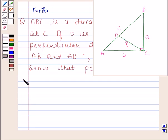Let us now begin with the solution. We are given that triangle ABC is right angled at C.